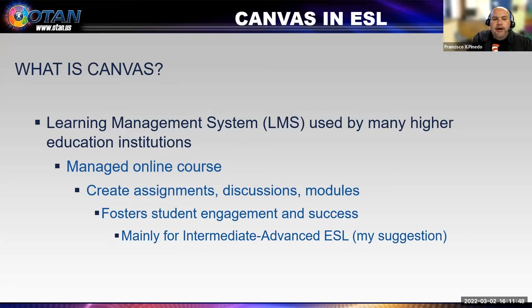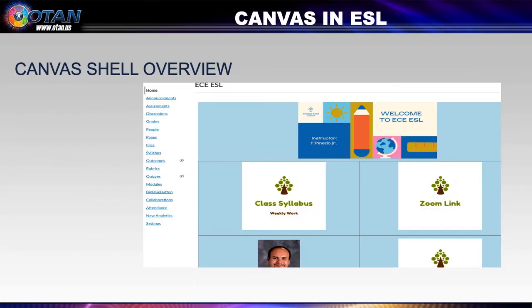This is an overview of what I call the Canvas shell. It's fairly simple — I don't want to overwhelm students. It has basic information like the class syllabus, the Zoom link, and my contact information. Most students, if we onboard them properly and teach them how to use it, will be very successful. It can be used for all students at all levels — it just takes time to teach them to use it independently.